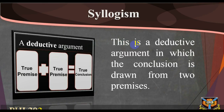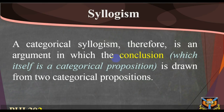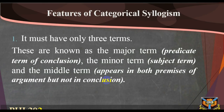A syllogism is a deductive argument in which the conclusion is drawn from two premises. A categorical syllogism therefore is an argument in which the conclusion, which itself is a categorical proposition, is drawn from two categorical propositions.